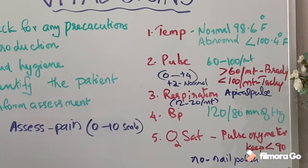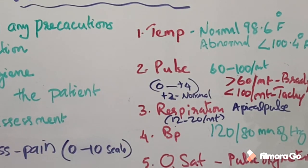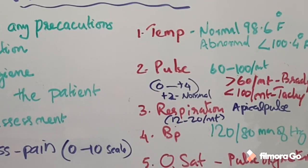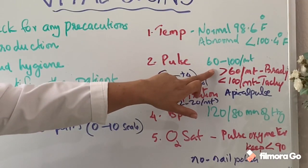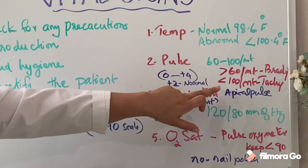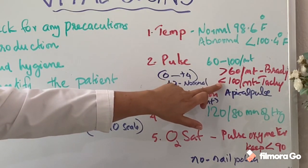The second component is pulse. You check the radial pulse or any other appropriate site for one complete minute. Normal pulse is between 60 and 100 beats per minute. Less than 60 is bradycardia; greater than 100 is tachycardia.